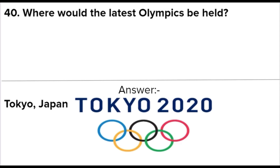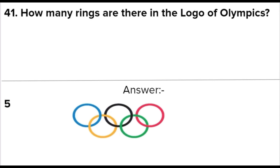Next question: Where would the latest Olympics be held? Answer: Tokyo, in Japan. Next question: How many rings are there in the logo of the Olympics? Answer: Five.